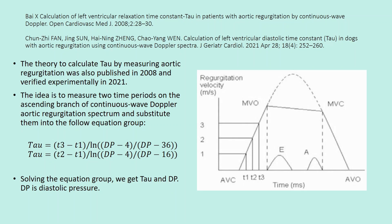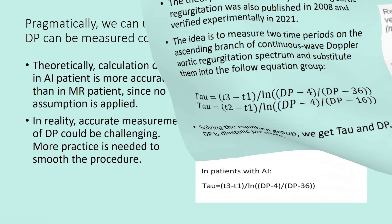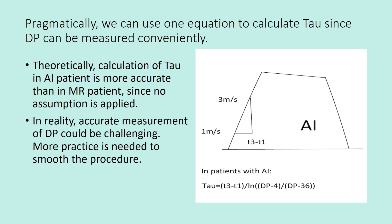Solving the equation group, we get tau and DP, where DP is diastolic pressure. Pragmatically, we can use one equation to calculate tau since DP can be measured conveniently. Theoretically, calculation of tau in aortic insufficiency patients is more accurate than in mitral regurgitation patients, since no assumption is applied.